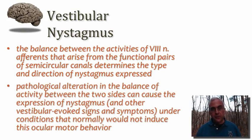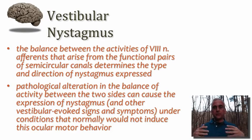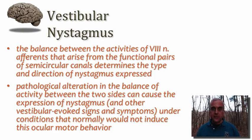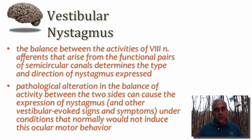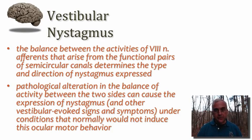When evaluating clinical patients for the presence of nystagmus, it's important to look for evidence of a pathological alteration in the balance of activity between the two sides of the vestibular nuclear complex. This is what gives rise to nystagmus under conditions that wouldn't normally induce this kind of ocular motor behavior. You want to have your patient's head stable and in neutral position while examining for nystagmus. You may induce certain head movements to test the operation of the vestibular system, but in medical neuroscience, what's critical is appreciating the effect of an imbalance of activity on the two sides of the vestibular system and what that does for the induction of nystagmus.